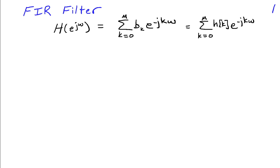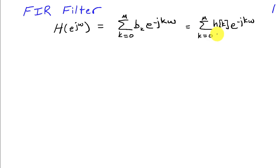Recall that the frequency response of an FIR filter can be expressed as a weighted sum of the filter coefficients. We have the sum of the B_k's times e to the minus jk omega, or since these coefficients B_k are the same as the impulse response, we'll write this in terms of the impulse response as a sum from k equals 0 to capital M of H of k times e to the minus jk omega.